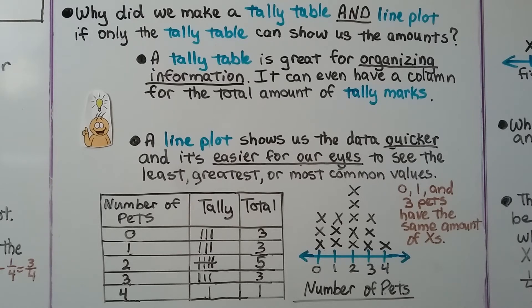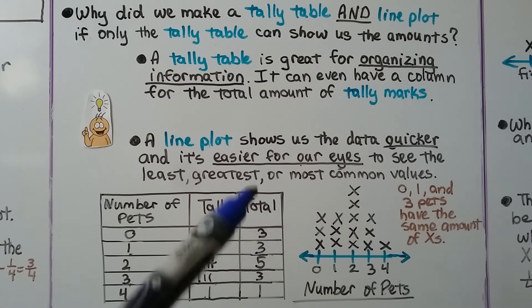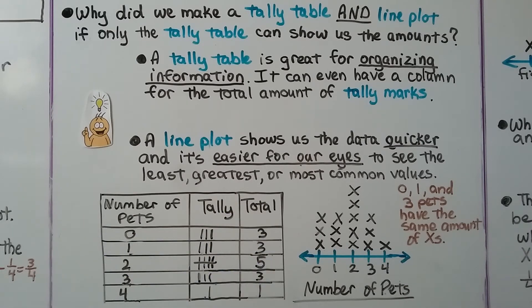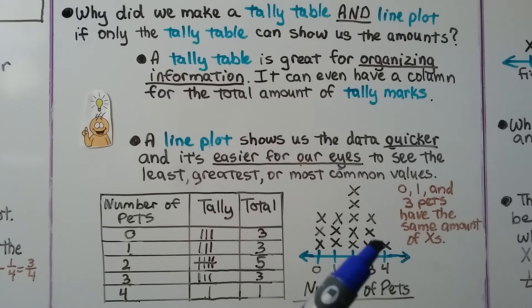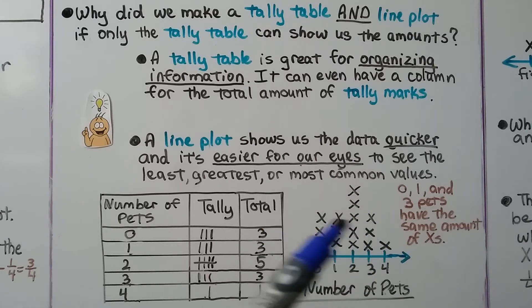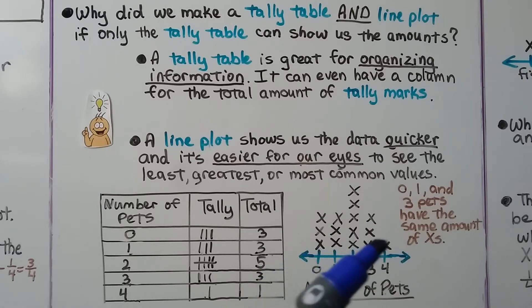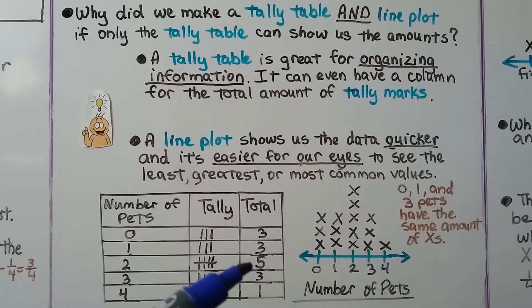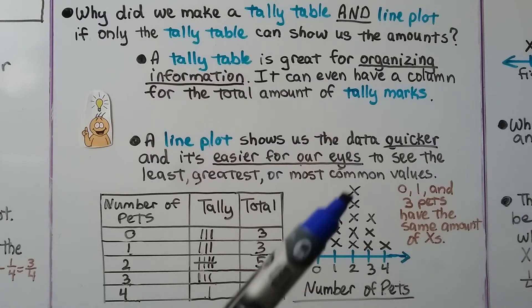Why did we make a tally table and line plot if only the tally table can show us the amounts? A tally table is great for organizing information — it can even have a column for the total amount of tally marks. But a line plot shows us the data quicker, and it's easier for our eyes to see the least, the greatest, or the most common values. We can see that zero, one, and three for the number of pets have the same amount of X's, but it's easier to immediately see that having two pets is the most popular answer.